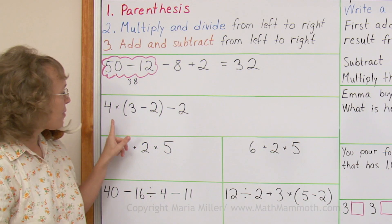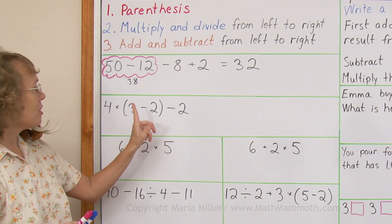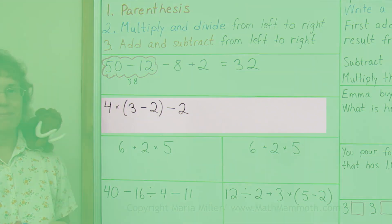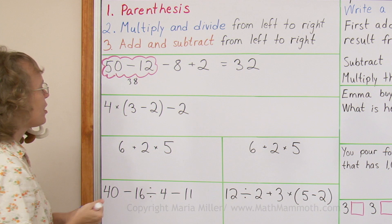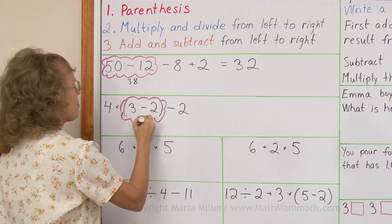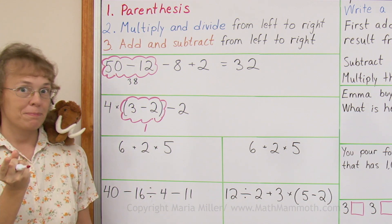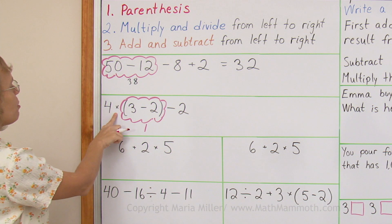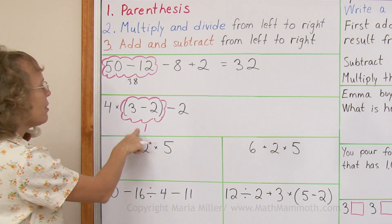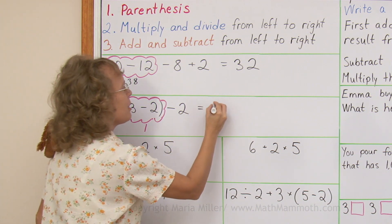Now in this one, can you tell me which operation is to be done first? There's a subtraction, subtraction, and a multiplication. There's parentheses — yes, that's what we do first. Let me draw my bubble here again. 3 minus 2 equals 1. And then which operation? Now we go to multiplication: 4 times 1 equals 4, minus 2 equals 2. So that was an easy problem.